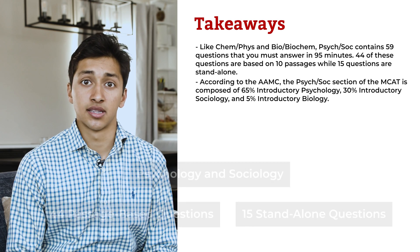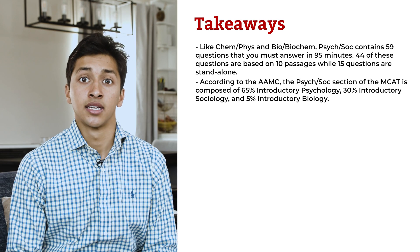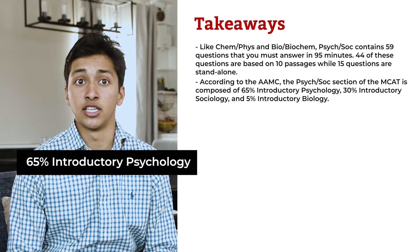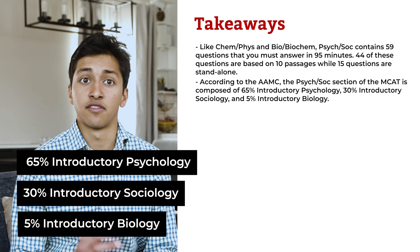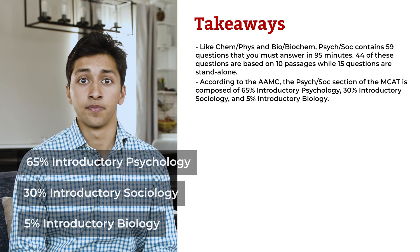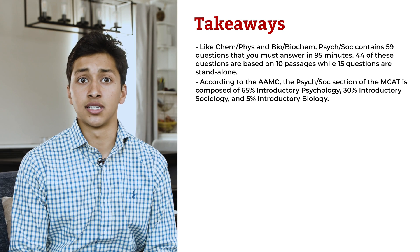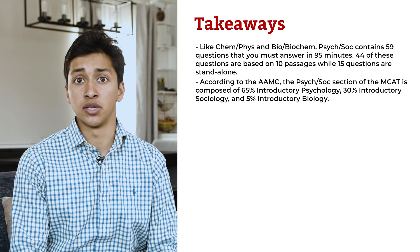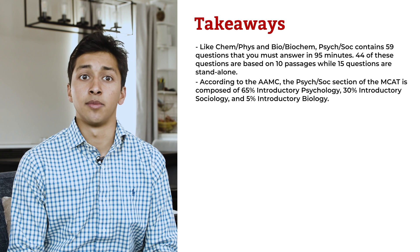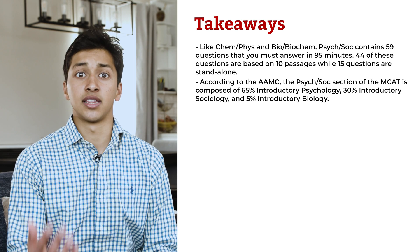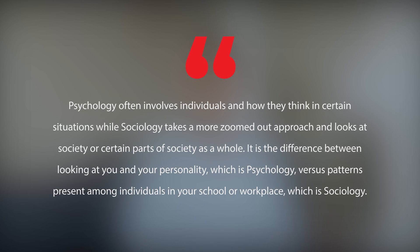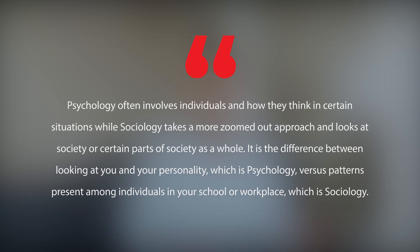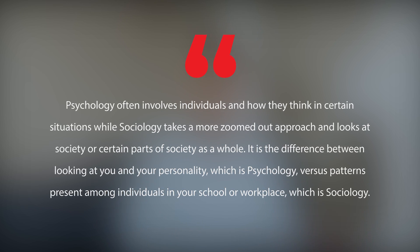According to the AAMC, the psych-soc section is composed of 65% introductory psychology, 30% introductory sociology, and 5% introductory biology. Many students haven't learned the distinction between psychology and sociology. You can think of it like this: psychology often involves individuals and how they think in certain situations, while sociology takes a more zoomed-out approach and looks at society, or certain parts of society, as a whole.